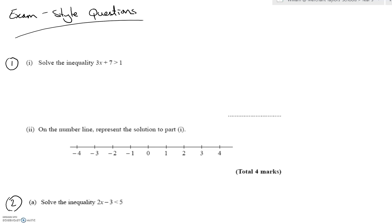Solving this inequality — this is something we looked at in the last video. We solve this just like we would solve an equation, but the inequality sign must hold. I'm going to minus seven from both sides, which gives me 3x on the left and minus six on the right. Divide by three — I'm dividing by a positive three, so the sign does not flip. So x greater than minus two would be the answer.